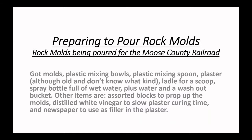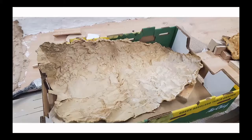So what we're doing, friend of mine is building an On30 layout in a 20 by 36 basement, which is kind of strange for California, but there are some. So for the Moose County Railroad, what we did, we got the molds, plastic mixing bowls, plastic mixing spoons, plaster. It's old and we don't know what kind, but a ladle for the scoop and a spray bottle full of wet water, plus water to wash out in a bucket. Other items are assorted blocks to prop up the molds. Distilled white vinegar to slow the plaster curing time. And newspaper to use as a filler in the plaster.